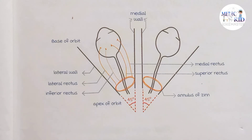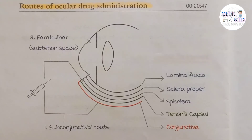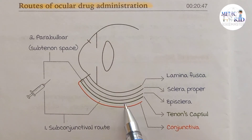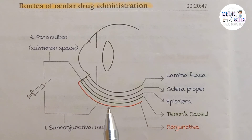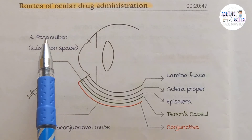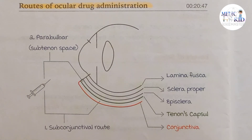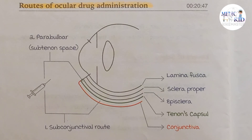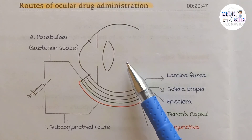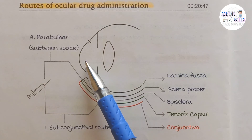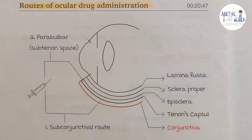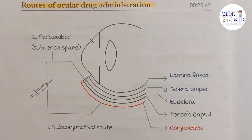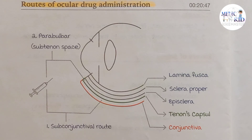To revise all routes of ocular drug administration: an injection below the conjunctiva is the subconjunctival route; a drug below Tenon's capsule is the parabulbar or sub-Tenon's route; drug applied on the surface is the topical route, using eye drops or eye ointment; drug given into the vitreous is the intravitreal route; drug into the anterior chamber is the intracameral route; and we have the peribulbar and retrobulbar routes used for local anesthesia. That is all you need to know about routes of ocular drug administration.